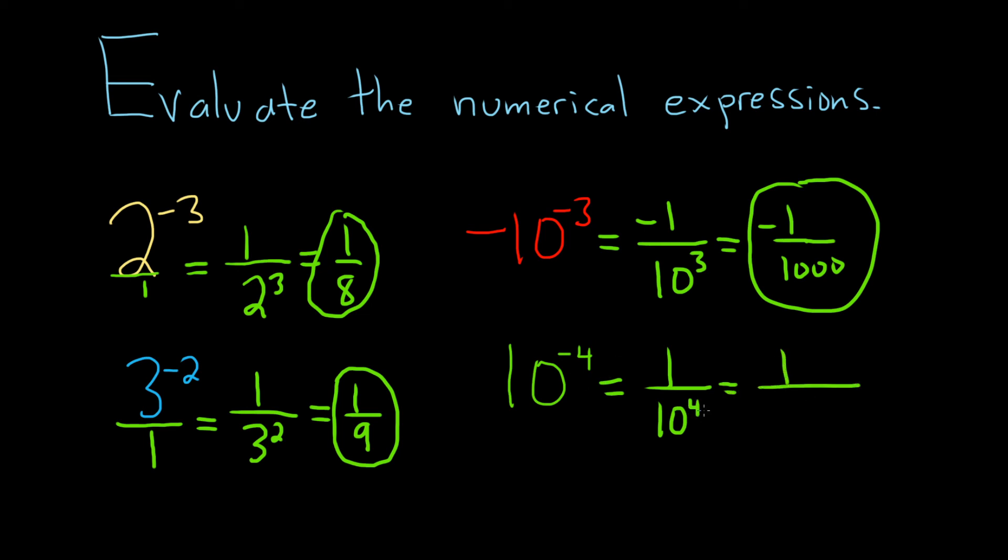Whenever you have 10 to a power like this, like 10 to the 4, you just write the 1 and then there's a 4 here so it's just 1, 2, 3, 4. That's how many zeros you write. Really powerful. So if you have 10 to the 5, it's a 1 and 5 zeros. 10 to the 6, it's a 1 and 6 zeros. And that would be the final answer.